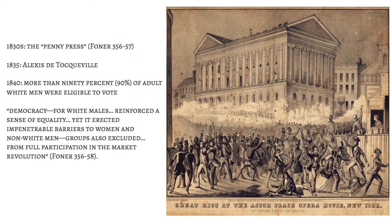At the time this seemed progressive: there were more people in America who could vote than in countries in Europe — way more. But it's limited to white male Americans. And there were actually states before this where if you owned property you could vote — there were Black people and some women who owned property and could vote. Those people actually lose their voting rights, because the property requirement is removed but voting rights become attached to being white and male.